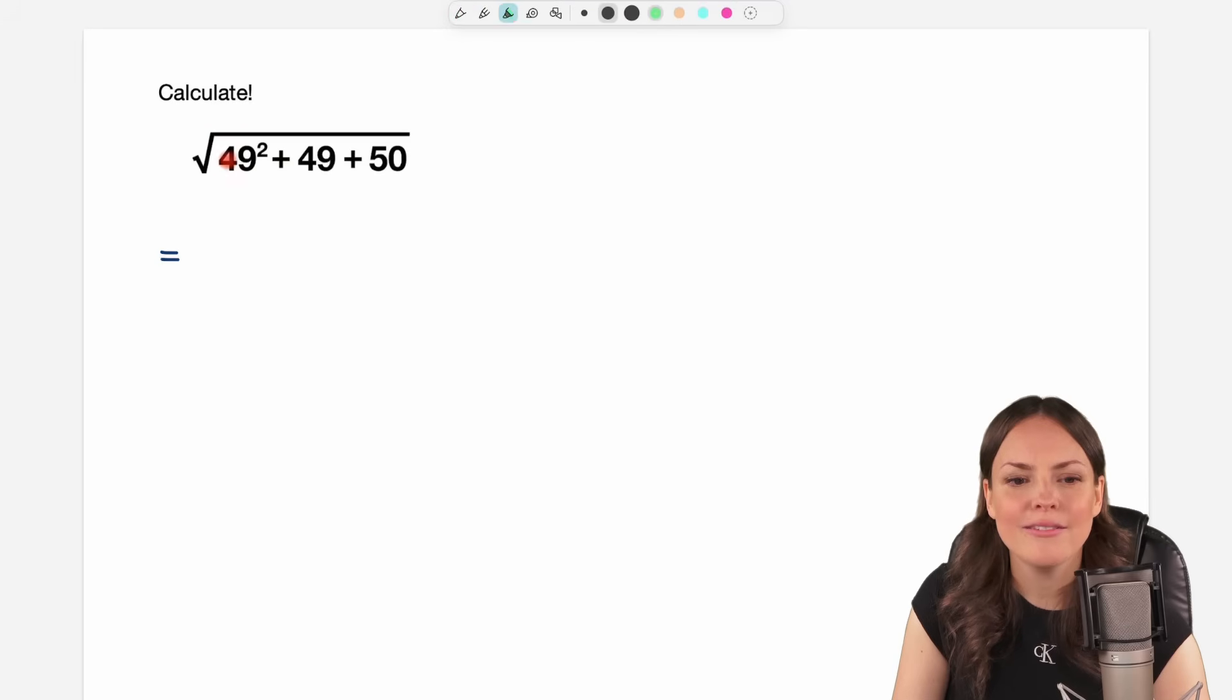We have 49 in here and 49 in here as well and in between we have a plus. So we could factor out a 49 out of this sum here. Let's try it and see if it helps us somehow.